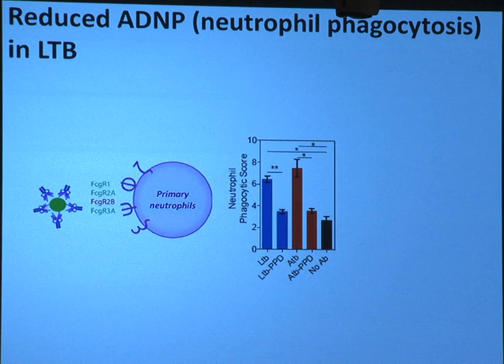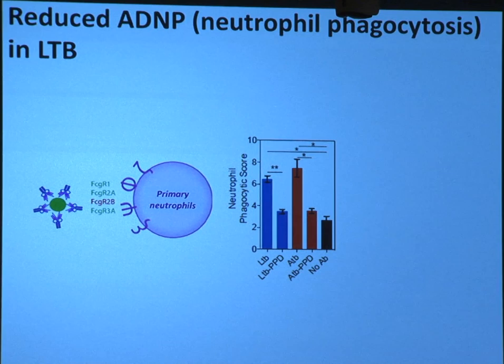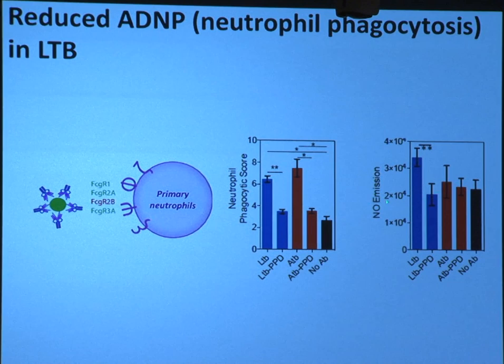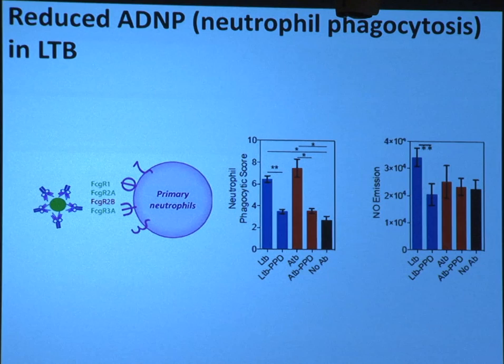Looking at neutrophils, the actives did a little bit better than the latents in phagocytosis, and the activity was always specific. But something really interesting emerged that we did not anticipate: once opsonized particles got into the cells, they induced different types of antimicrobial states within the innate immune cells. More complexes get into the actives, but once they're in, they don't really activate the neutrophils to do anything antimicrobial. But the latently infected antibodies drove very high levels of nitric oxide — they can actually arm the neutrophils to destroy the pathogen within them as well as around them.